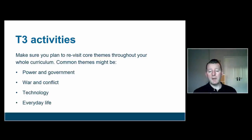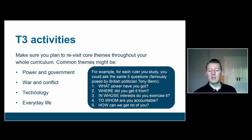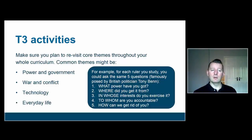As an example, Tony Benn — a very famous British politician on the left — posed five questions. If we were thinking about simple, easy ways to build up this theme of power and government, every time you engage with the story of a ruler, a government, or a powerful person in history, you could encourage children to answer these five questions: What power has this person got? Where did they get it from? In whose interest do they exercise it? To whom are they accountable? And how could the people at the time have got rid of them? Tony Benn suggests these questions for contemporary politicians, but you can use them in historical context, and pretty soon children get a sense of how government and power changes over the long sweep of time. At the end of a year you could revisit these questions and ask them what patterns and trends emerged over the teaching.